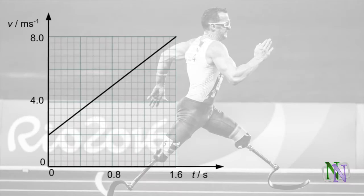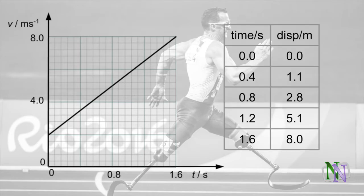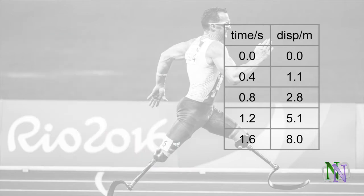We can change a velocity time graph into a displacement time graph. Although the VT graph is straight, the ST graph is not a straight line. Looking at this graph, we know that the initial displacement is zero, and we can calculate the other ones by the areas under the curve for each time. We find that the displacements covered are increased by increasing amounts.